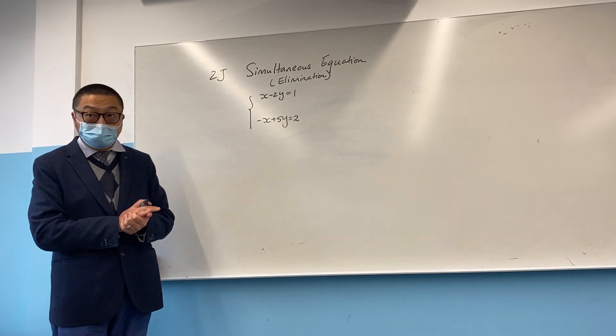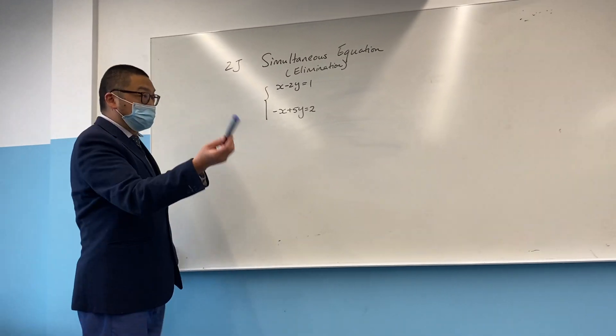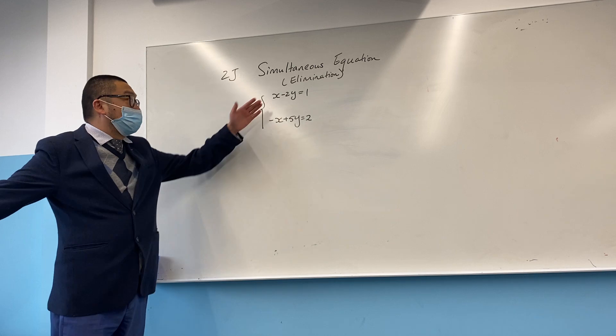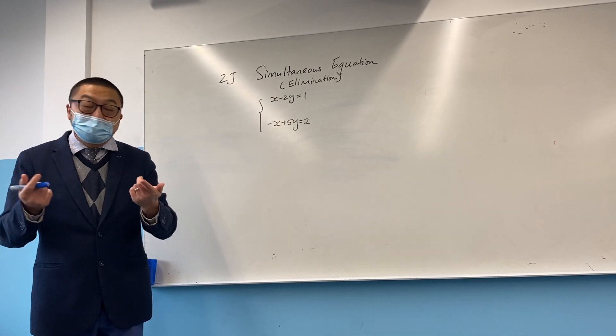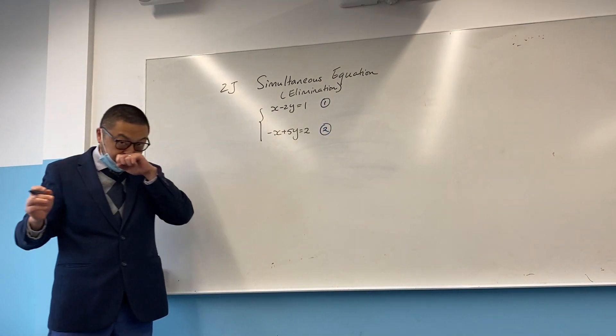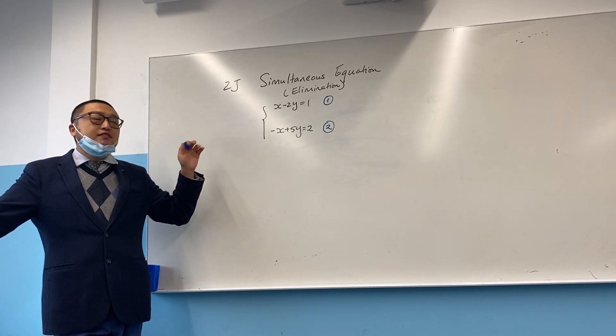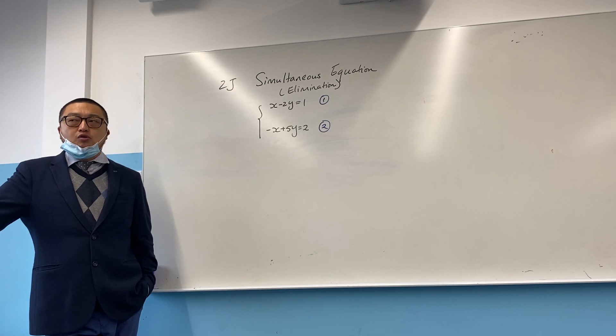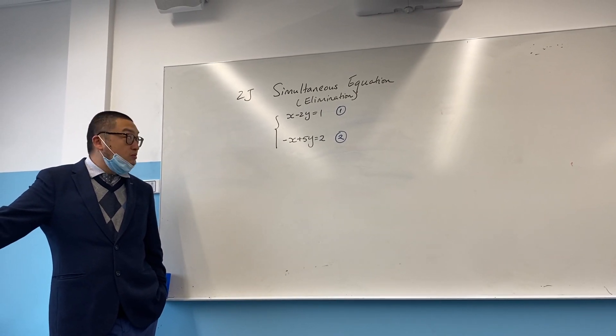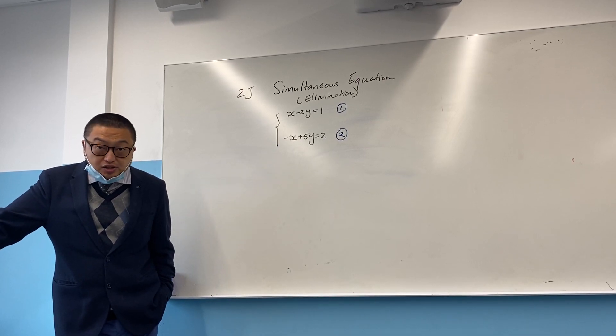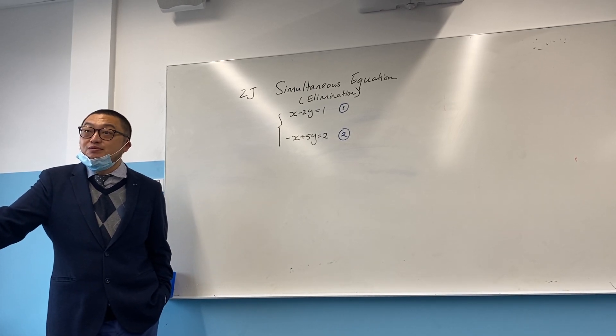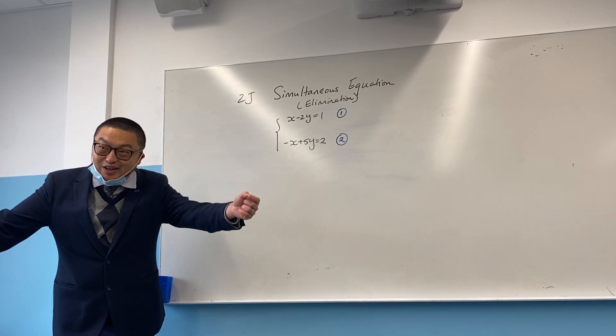I'm going to do quite a few examples today. Let's look at the first one. Whenever we say simultaneous equations, we got two equations, right? That's why we call them simultaneous, because it happened at the same time. Now let's have a look. I'm going to ask quite a few important questions first before I do the working out. Have a look at equation 1 and equation 2 and focus on the coefficient of x. What does the coefficient mean? The number before the letter, very good.